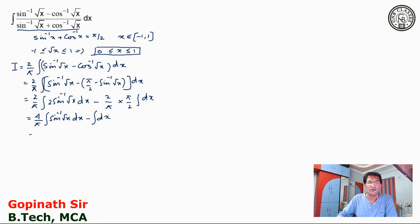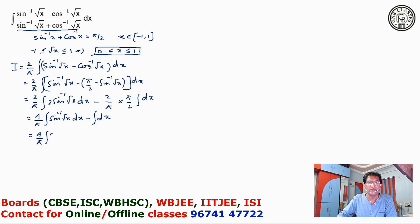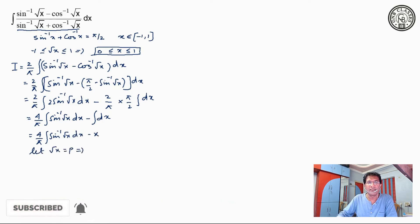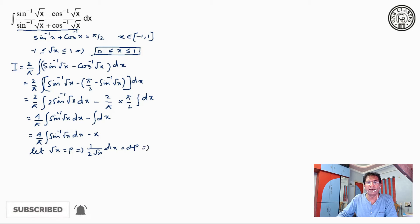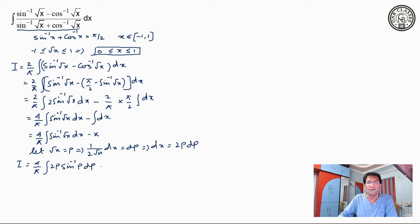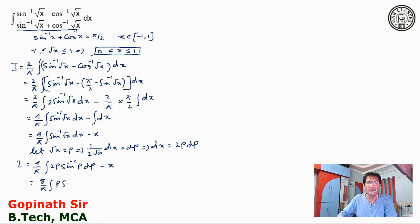So it is basically 4 by pi sin inverse root x dx minus integration dx. From here we can write it as 4 by pi integration sin inverse root x dx minus x. Now let root x equal p, that implies 1 by 2 root x dx. After substitution, the integration becomes 2p sin inverse p dp minus x. Taking 2 outside, it will be 8 by pi integration p sin inverse p dp minus x.